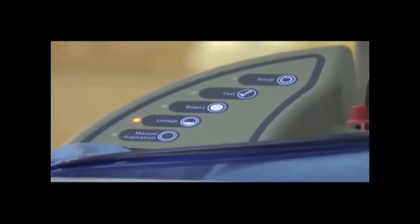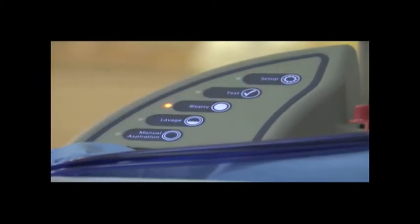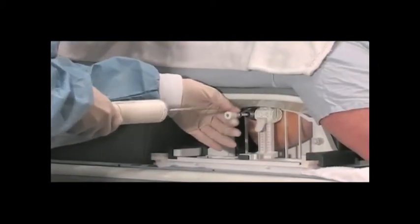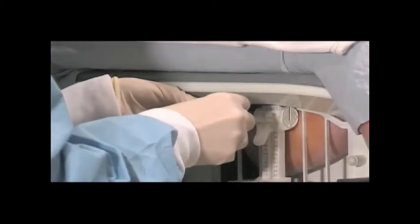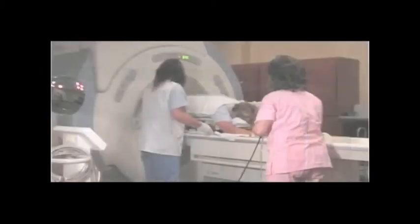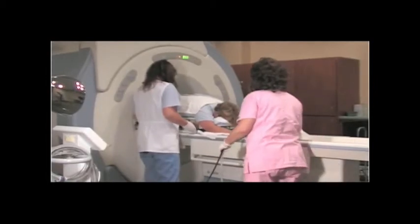Switch the console back to biopsy mode by pressing the button marked Biopsy. Remove the ATEC handpiece while leaving the introducer sheath in place. To verify the successful biopsy of the area of interest, reinsert the localizing obturator back into the introducer sheath. Move the patient back into the magnet bore to acquire post-biopsy sagittal and axial image sequences.